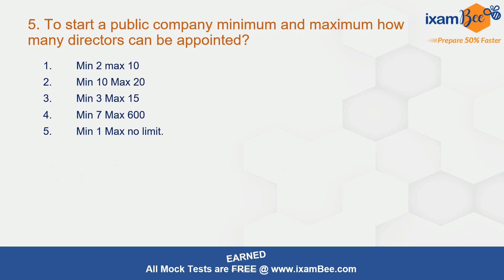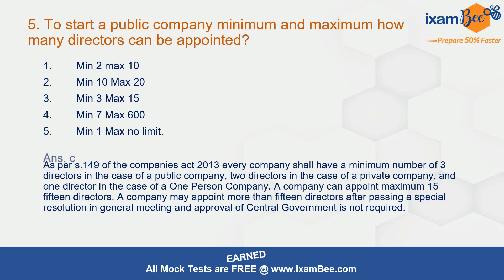Question 5: to start a public company, what is the minimum and maximum number of directors that can be appointed? The correct answer is C — minimum 3, maximum 15. This is as per section 149 of the Companies Act 2013. Every company shall have a minimum of three directors in the case of a public company, two directors in the case of a private company, and one director in the case of a one-person company.